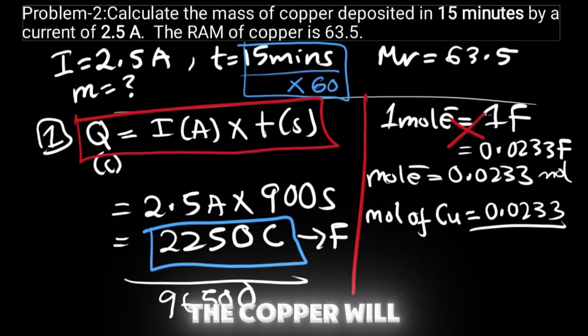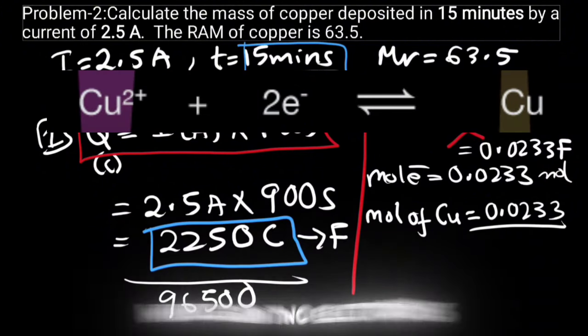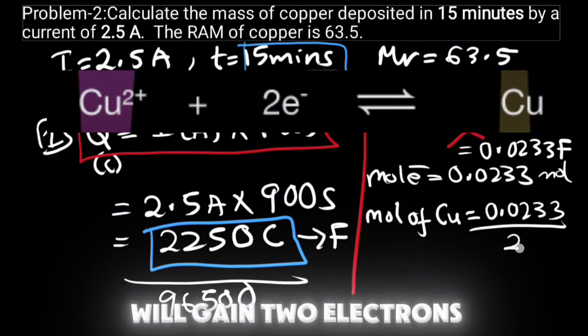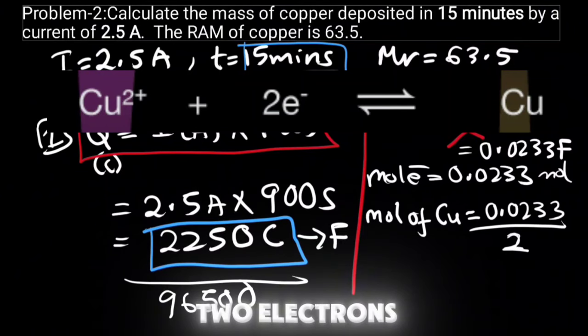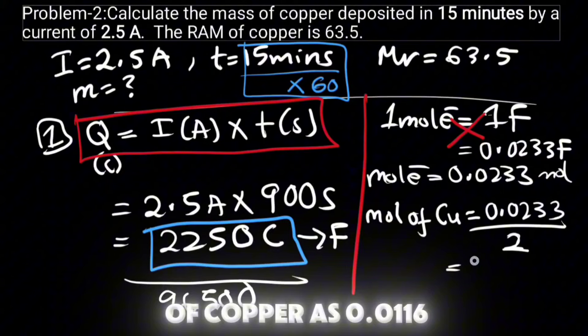So in this case, the copper will gain two electrons. Divide this and you will get your number of moles of copper as 0.0116.